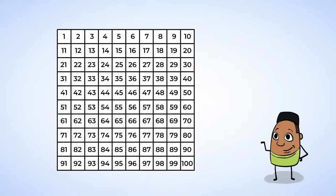Let's start counting the numbers in the first row. 1, 2, 3, 4, 5, 6, 7, 8, 9, 10.